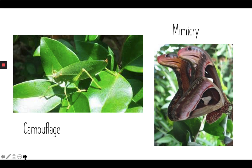The second one is called mimicry. The picture on the right is a butterfly, but the patterns on the butterfly's wings mimic a snake. When predators see this, they think it's a snake and not a butterfly, and they leave the butterfly alone. So both of these types of adaptations allow these insects to survive and avoid being eaten by birds and small animals.